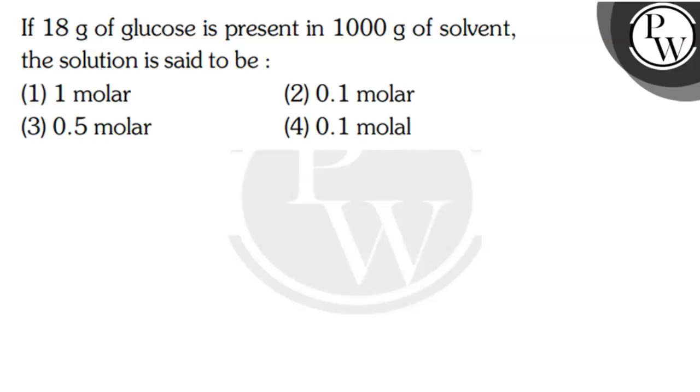Let's read the question. The question says that if 18 grams of glucose is present in 1000 grams of solvent, the solution is said to be... We have given here four options.